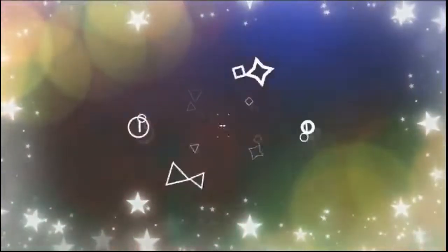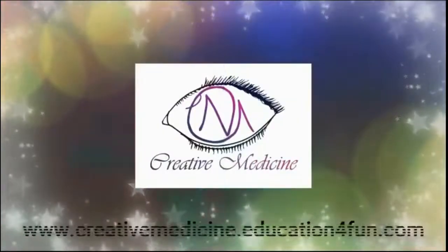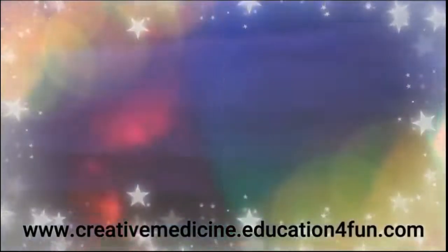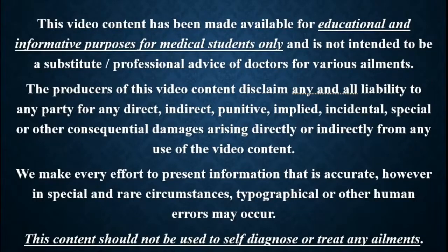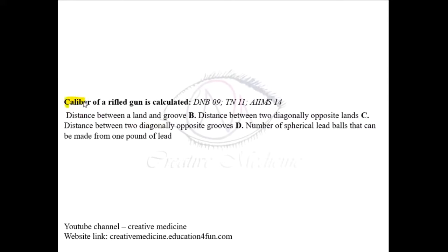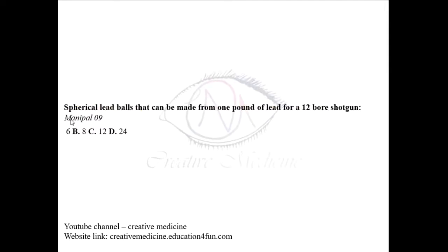Hello friends, welcome to Creative Medicine. In this lecture, we will learn about the caliber of a rifle. The caliber of a gun is calculated by the distance between two diagonally opposite lands. Lands are the elevated areas inside the barrel.